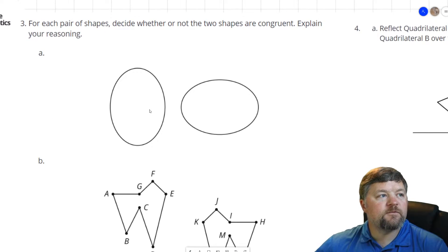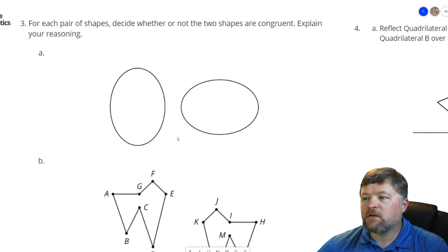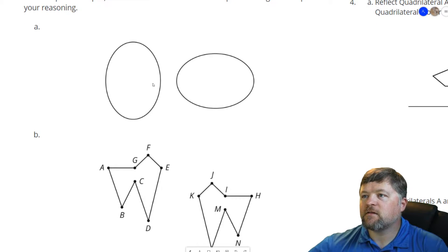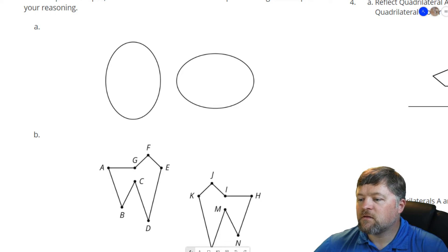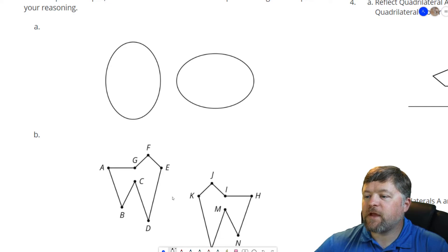For each pair of shapes decide whether or not the two shapes are congruent. Explain your reasoning. Are these two figures congruent? Well, let me try the tracing paper method and if I trace this figure, okay...